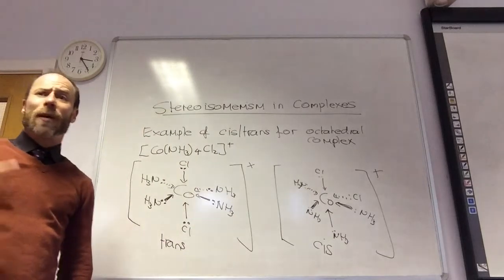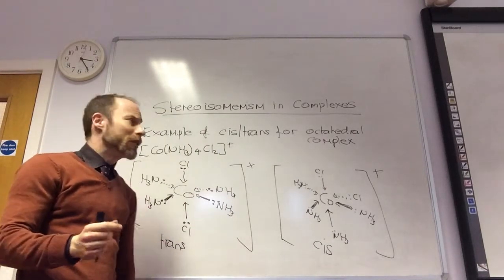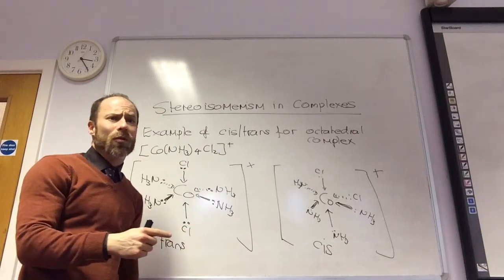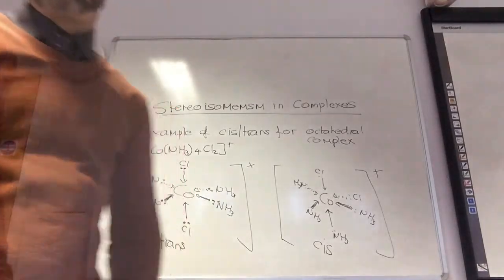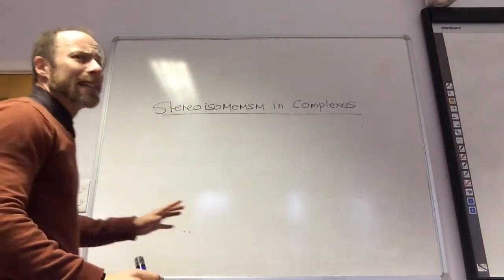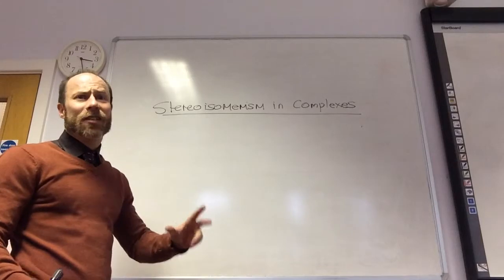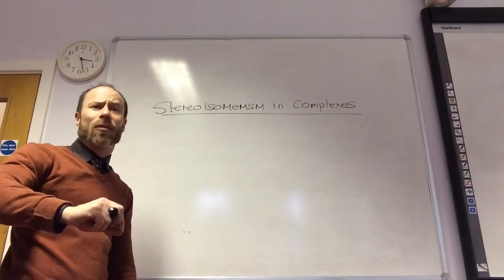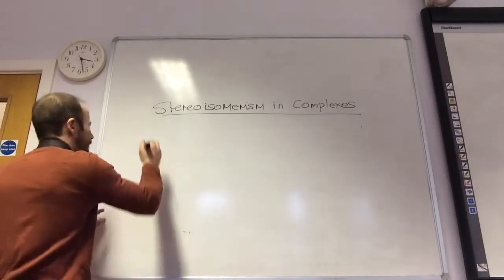So now you've got an example of a square planar showing cis-trans isomerism, and an example of an octahedral complex showing cis-trans isomerism. Right, so the next one is a different type of stereoisomerism. We've done cis-trans. What's another type of stereoisomerism? Optical. Right, so let's do optical.